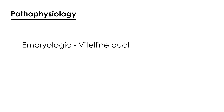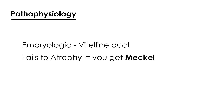It's an embryologic problem. There is a duct called the vitelline duct that normally atrophies. But if this duct fails to atrophy during the embryologic stage, you get Meckel's diverticulum. So it's basically an error in embryology.